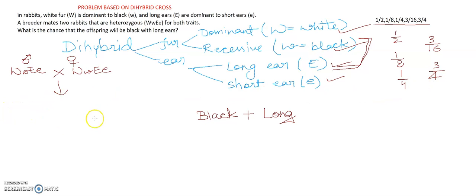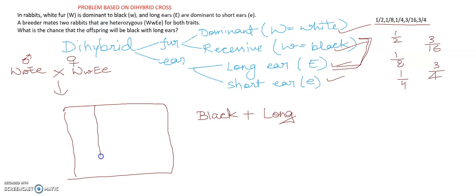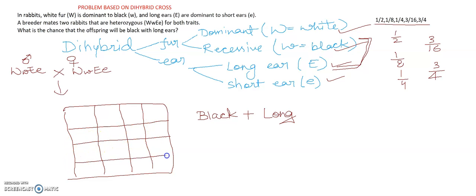So we will make the full checkerboard for this. As you know, from a dihybrid cross we get 4 types of gametes, as I already discussed with you in the dihybrid cross video. If you want to draw the checkerboard, you can draw it yourself. I will not re-draw the full checkerboard here — if you want to see it, you can go to our dihybrid cross video. The gametes are: capital WE, capital W small e, small w capital E, and small w small e.